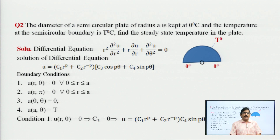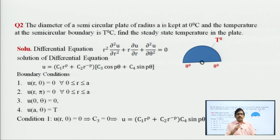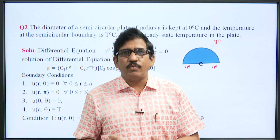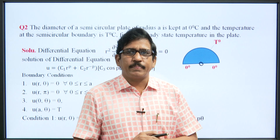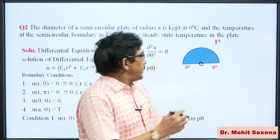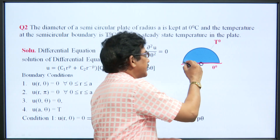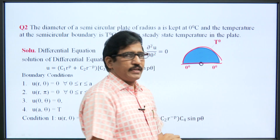The problem: the diameter of a semicircular plate of radius a is kept at 0° centigrade and the temperature of the semicircular boundary is T° centigrade. Find the steady-state temperature of the semicircular object at any point. Two conditions: the diameter is at 0° and the curved boundary is at T°.